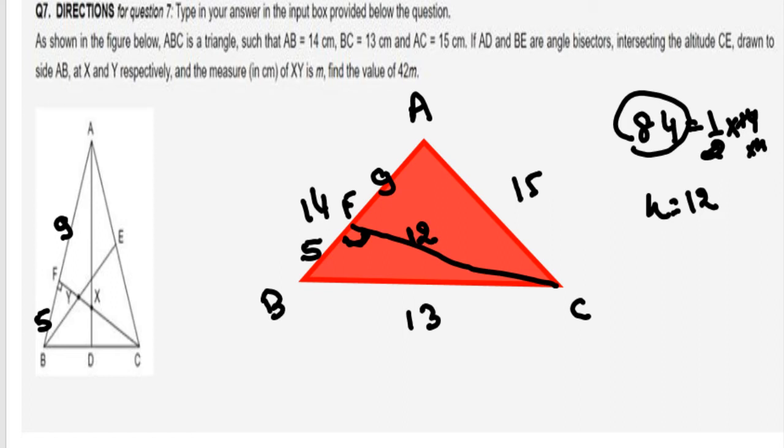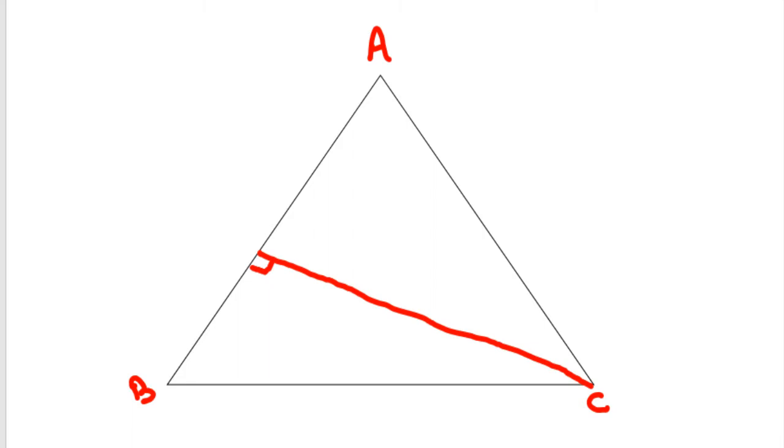Now we can say and we have to find what? That is X and Y where the BE and AD are the angle bisectors. So first we plot the triangle, then we plot BE. Now we have this figure. We have this figure and in this figure what value do we have? We have nothing but this one is 5, this one is 9, this one is 13, this one is 15.